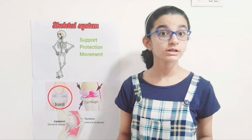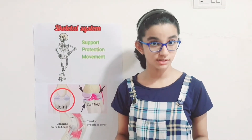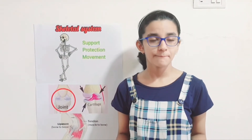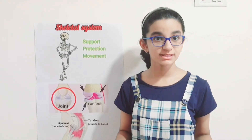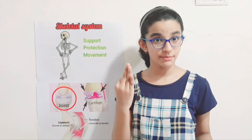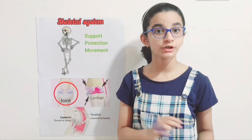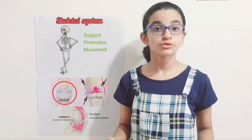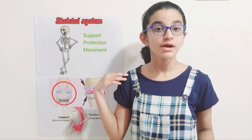Now we will talk about how to take care of our skeletal system. We should eat plenty of food that has calcium, for example milk, yogurt, or almonds. We should drink plenty of water to keep our body tissues strong, and exercise daily to strengthen our joints and muscles.